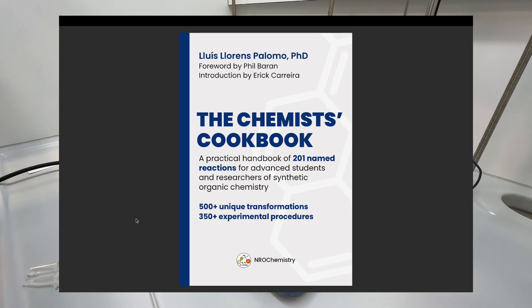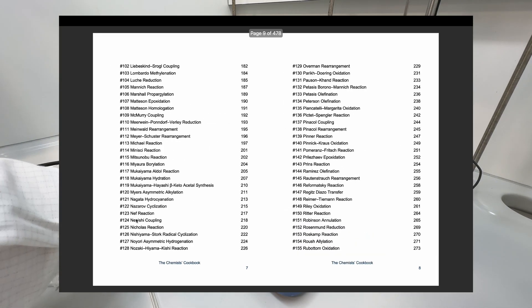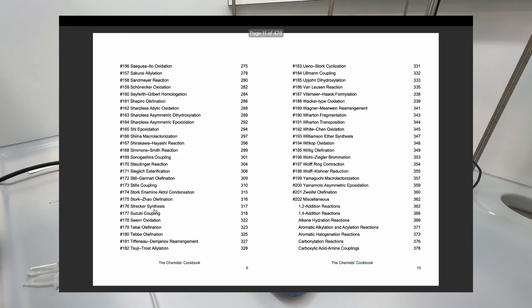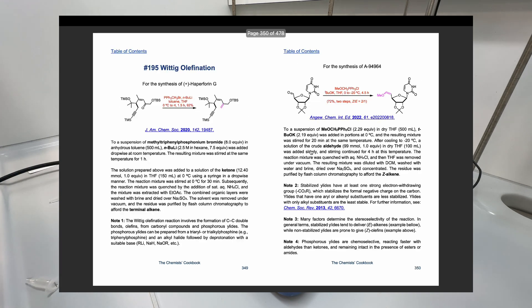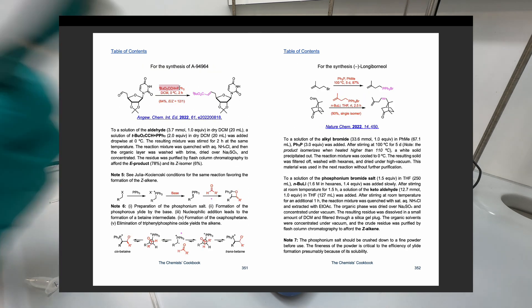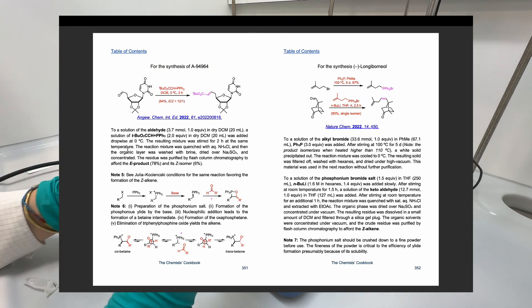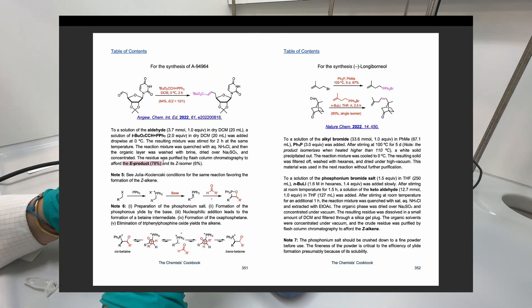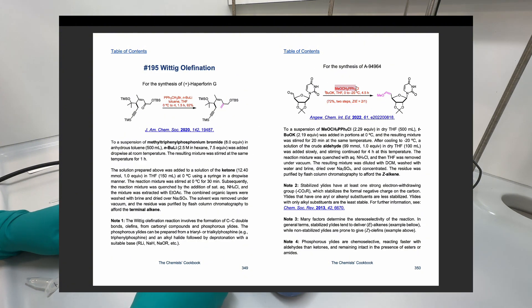As noted in the chemist's cookbook, stabilised ylides — which have at least one strong electron-withdrawing group to stabilize the formal negative charge on the carbon — give the E-product. On the other hand, less stable ylides tend to give the Z-product.